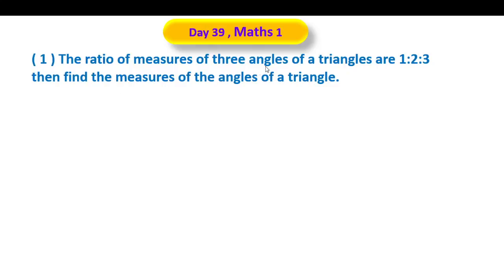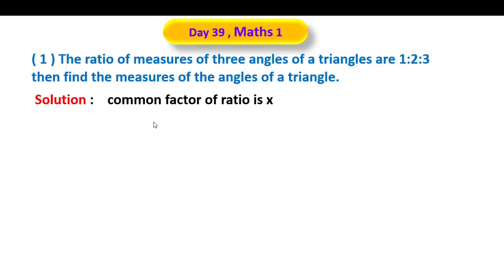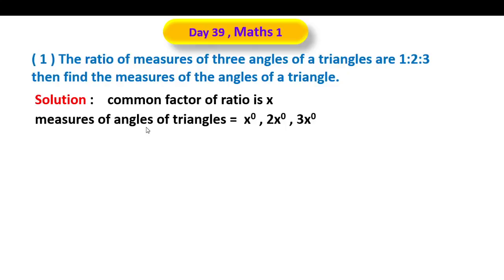The triangle's 3 angles have a ratio of 1 is to 2 is to 3, and we will find the measures of the angles of the triangle. Solution: the common factor of the ratio is x. The ratio 1 is to 2 is to 3 becomes x, 2x, and 3x. Therefore the measures of the angles of the triangle are x degrees, 2x degrees, and 3x degrees.